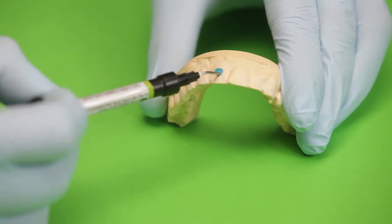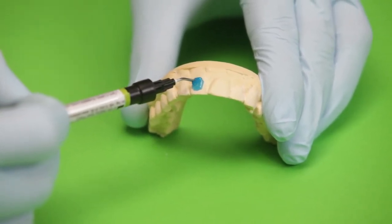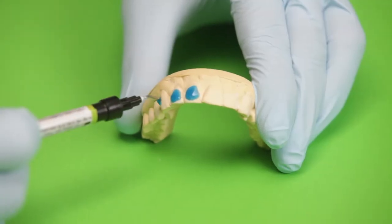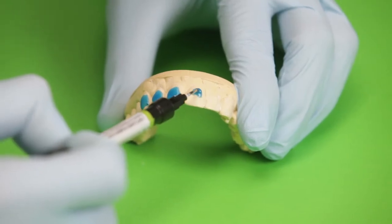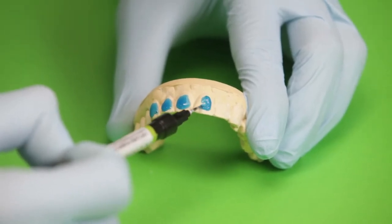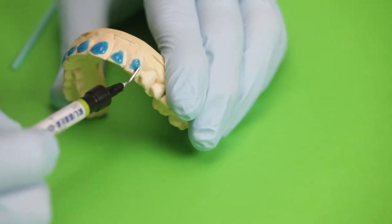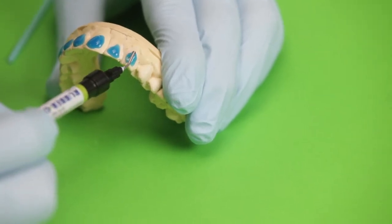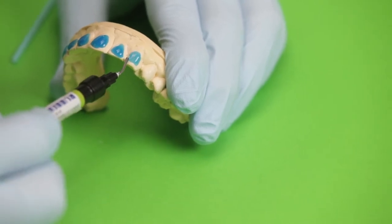We can then begin adding some blockout resin onto the labial surfaces of the teeth on the dried cast. This will help create a reservoir or space for bleaching material to be held inside. It also prevents direct contact of the tray with the teeth, thereby preventing any forces on them. Notice that I am a good millimeter short of the gingival margin and the incisal edges. This is important as you don't want any bleach to contact the gingival tissue.